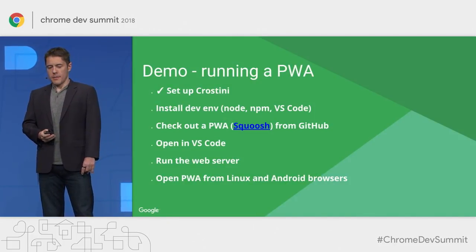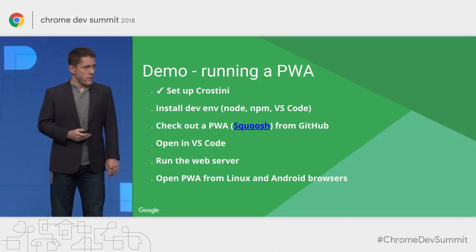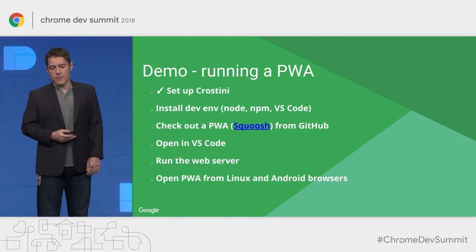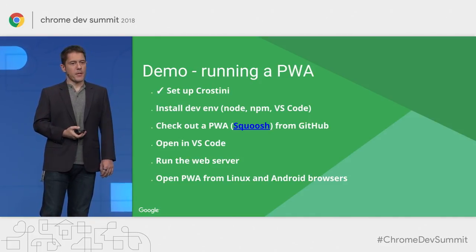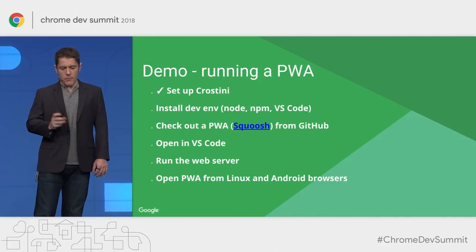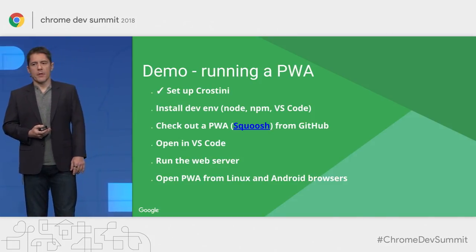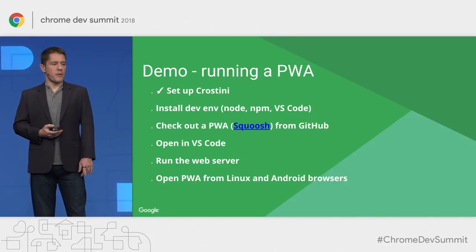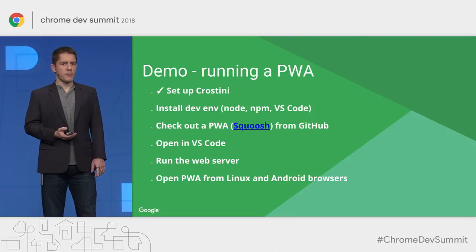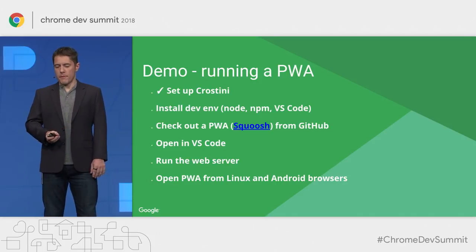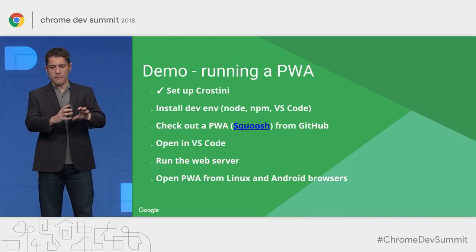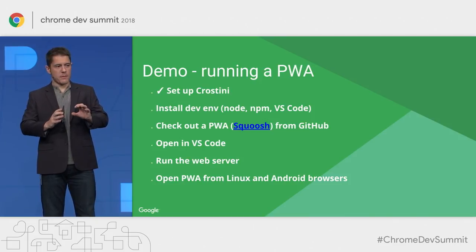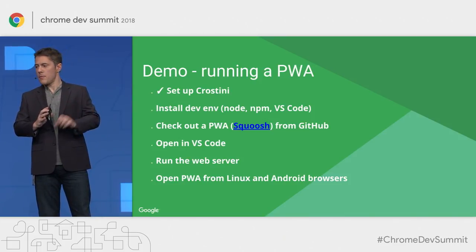Now let's do a demo and see if anything blows up. I've set up Crostini already. We're going to install Node, VS Code, and NPM, then check out Squoosh — the image recompression app you may have seen in earlier talks. We'll open it in VS Code to check out the code, run the web server, and most interestingly, open Squoosh from an Android browser on the very same device. And if things work, we'll also do some remote debugging.